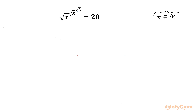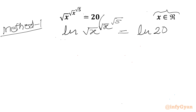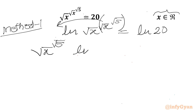I will be solving this question in two ways. So let me write here method number one. I will take the natural log of both sides. So ln of (√x)^((√x)^(√5)) will be equal to ln 20. Now using the log property we can take this power as a multiplier, so I can write (√x)^(√5) times ln(√x), which will be equal to ln 20.